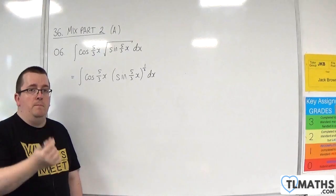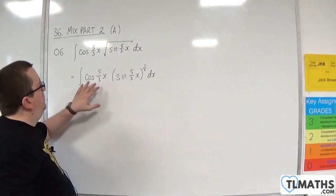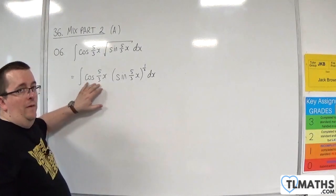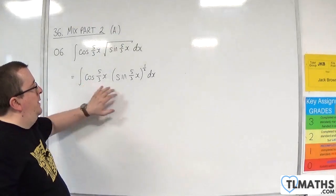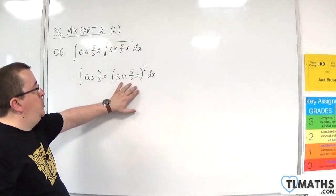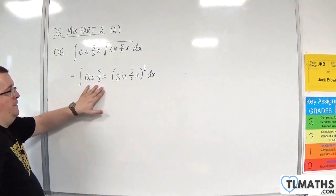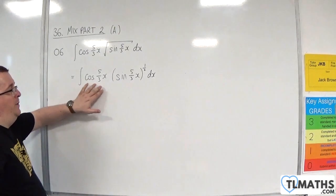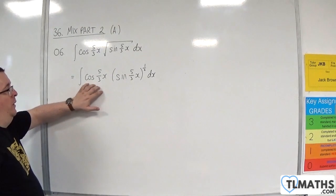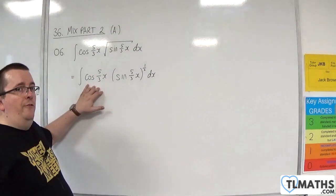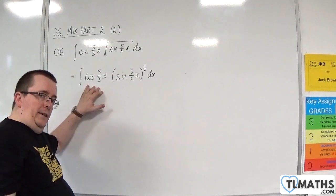Because sine of 5 thirds x will differentiate to 5 thirds cosine of 5 thirds x. Now, we don't have 5 thirds of cosine of 5 thirds x. We've got 3 fifths of what we need.